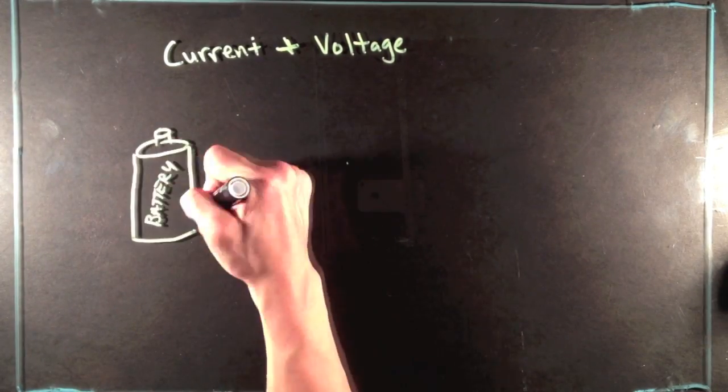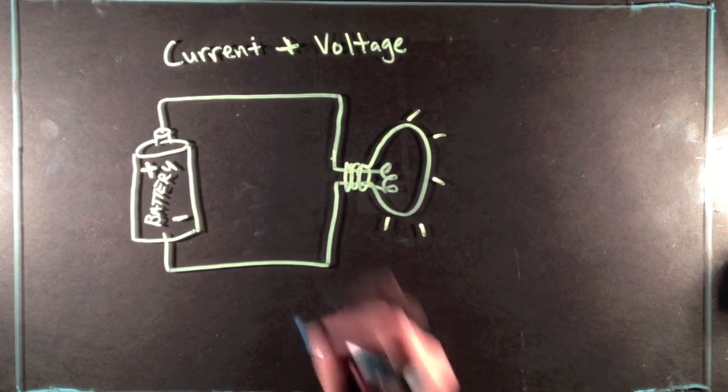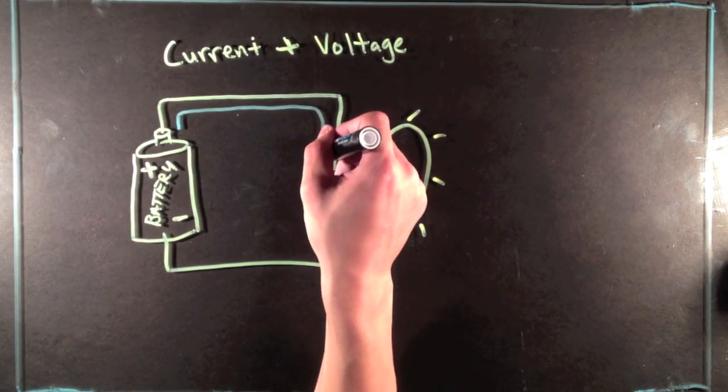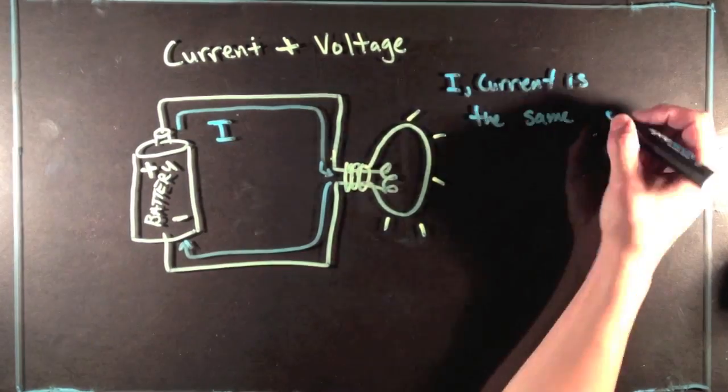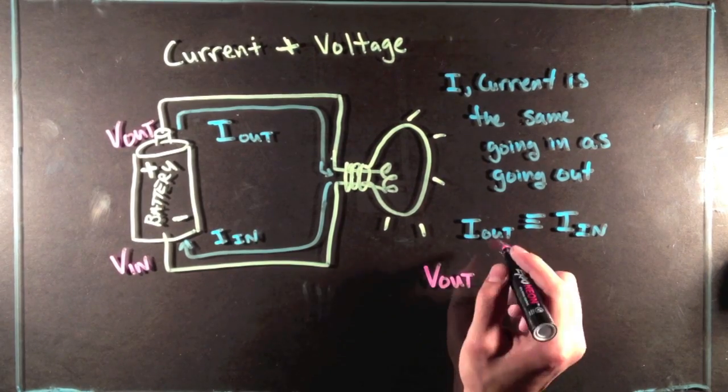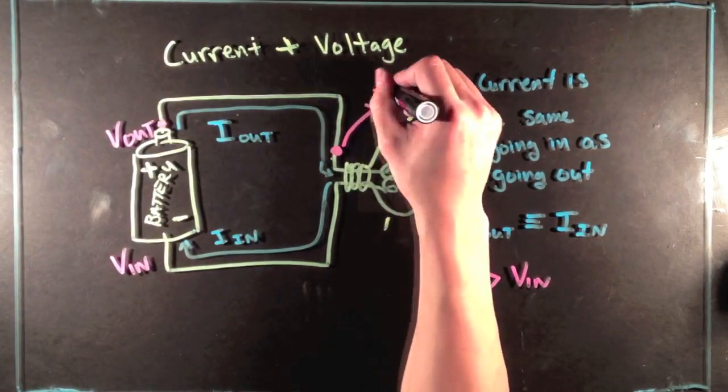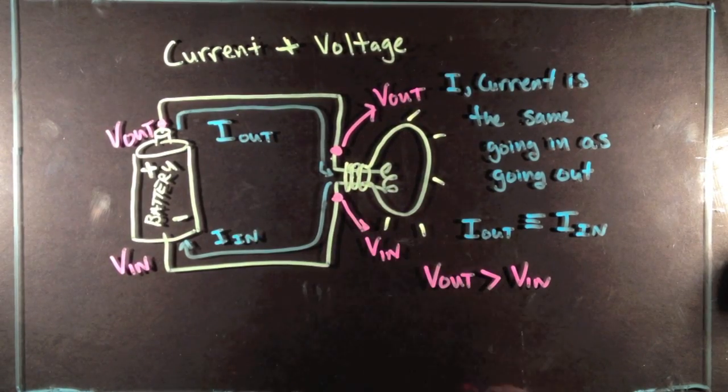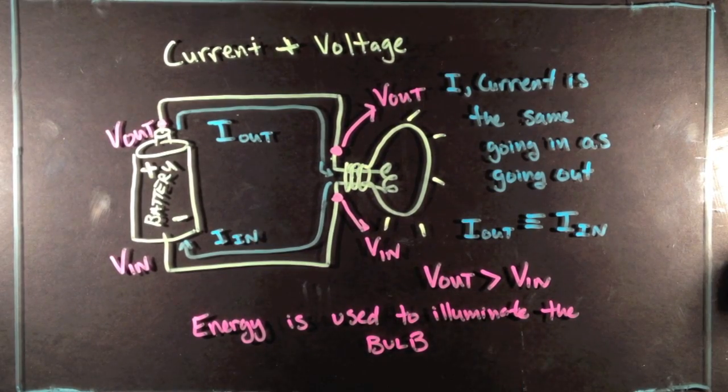Now, let's take a look at an actual circuit with a battery, a wire, and a light, instead of a pump, a pipe, and a turbine. Just like the water in the pipe, current is going to flow out of the battery at the same rate as current flows into the battery. And just like there needed to be a pressure difference across the turbine in order for it to turn, there needs to be a voltage difference across the light bulb in order for it to light. This is the same voltage difference that is also across the battery, and again, the voltage out needs to be greater than the voltage in.